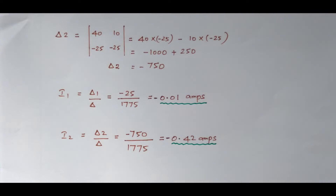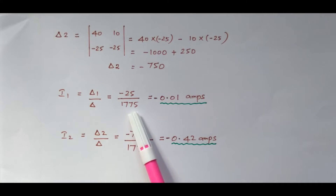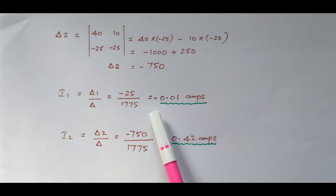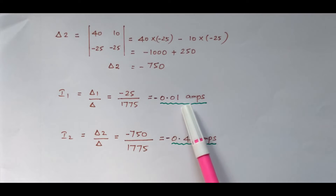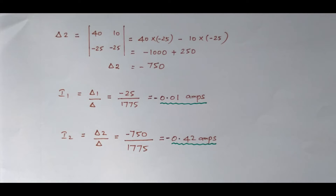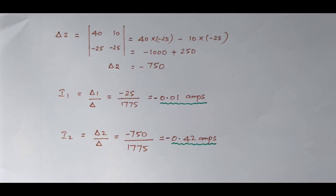From delta, delta 1, and delta 2, we can find I1 and I2. I1 = delta 1 / delta = minus 25 / 1775 ≈ minus 0.014 amperes. I2 = delta 2 / delta = minus 750 / 1775 ≈ minus 0.42 amperes. So using the matrix method of mesh analysis, we have calculated the loop currents I1 and I2. The same problem is also solved by the equation method — that video link is available in the description box. Thank you.